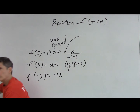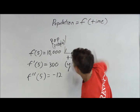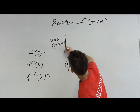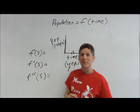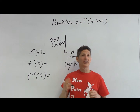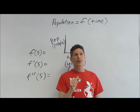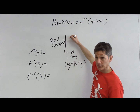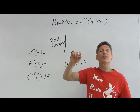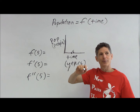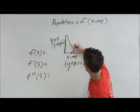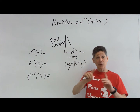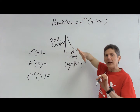Let's do another scenario. This time, let's say the population is decreasing. So it's going downhill, but at a decreasing rate — meaning the population is decreasing, but the rate at which it's decreasing is slowing. You can see that it's more gradual.